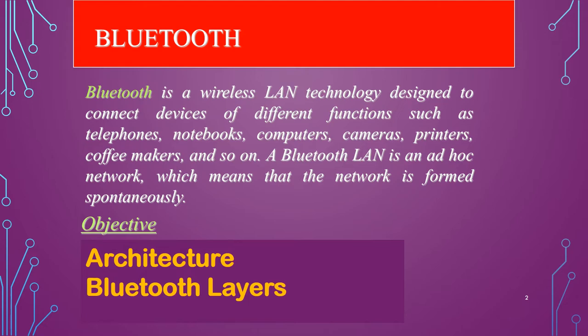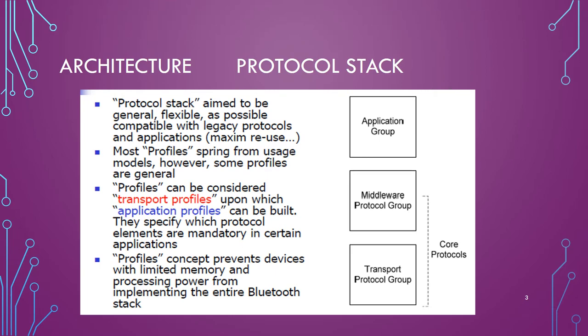Now we will discuss the architecture and layers. Bluetooth is basically a protocol stack divided into three parts: the application group, the middleware group, and the transport group. Core protocols come under the middleware protocol group and transport protocol group. It is designed to be as flexible and compatible with legacy protocols and applications as possible so you can reuse most profiles. Some profiles spring from usage models; some general profiles can be considered transport profiles upon which application profiles are built. Specific mandatory protocol elements for certain applications are specified accordingly.